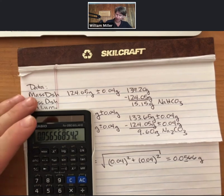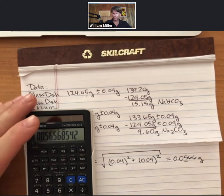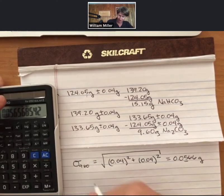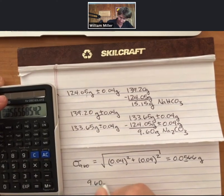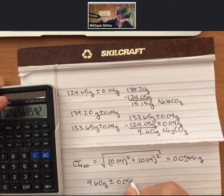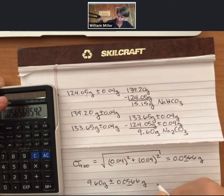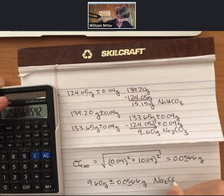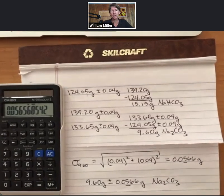And this is grams, and this is plus or minus, but when I write the whole number, I'm going to write 9.60 grams plus or minus 0.0566 grams sodium carbonate.